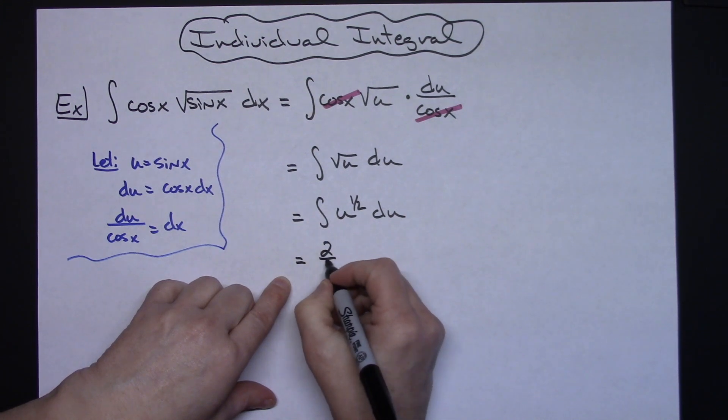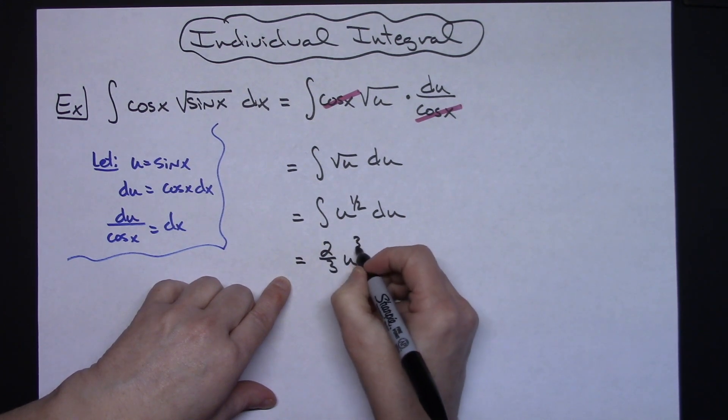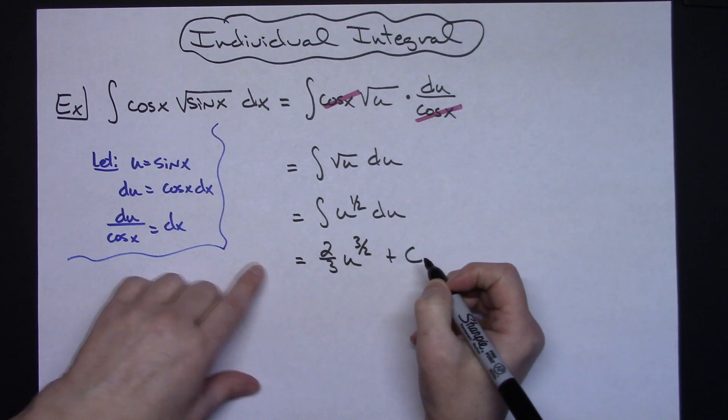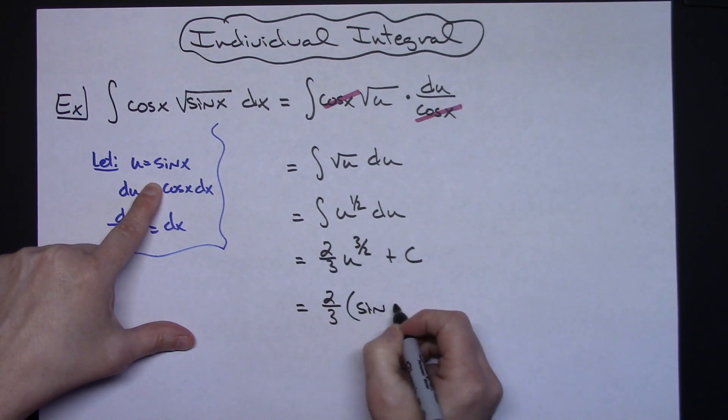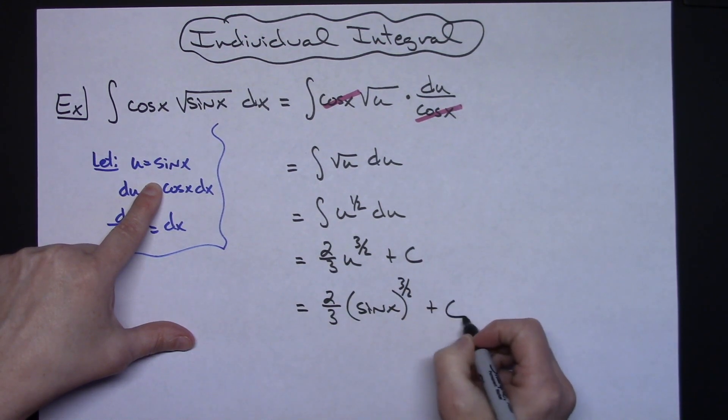Multiplying by that reciprocal we'll have two thirds u raised to the three halves plus c and then replacing u with what it is equal to two thirds sine x raised to the three halves plus c.